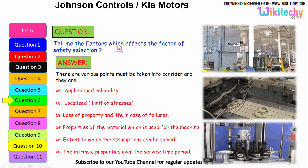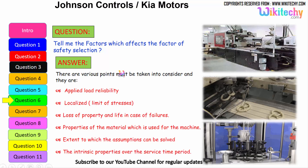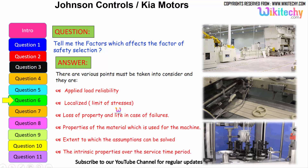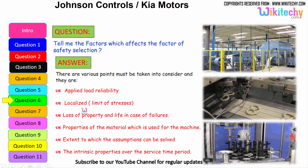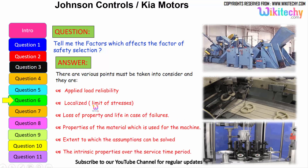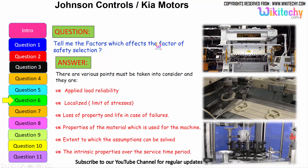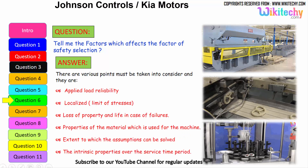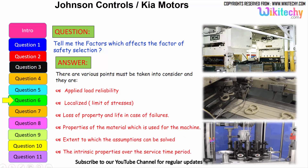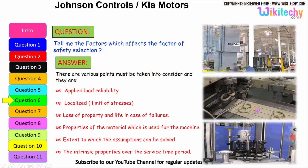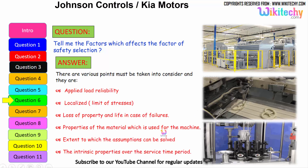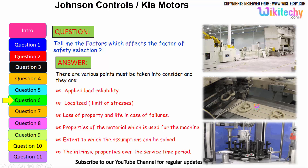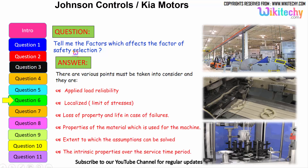Now let us see the factors which affect the factor of safety selection. These include: applied load reliability; limit of stress as localized; loss of property and life in case of failure — a very important factor; properties of the material used for the machine; the extent to which assumptions can be resolved, such as how much it will extend or compress; and the intrinsic property over the service time period — how it will sustain. All these must be considered for factor of safety selection.